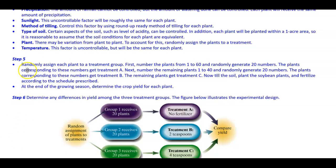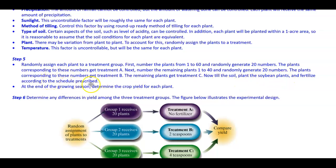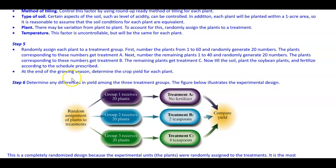Step five: randomly assign each plant to a treatment group. Number the plants from 1 to 60 and randomly generate 20 numbers — the plants corresponding to these numbers get treatment A. Number the remaining plants from 1 to 40 and randomly generate 20 numbers — those get treatment B, and the remaining plants get treatment C. Then till the soil, plant the soybean plants, and fertilize according to the prescribed schedule. At the end of the growing season, determine the crop yield for each plant.